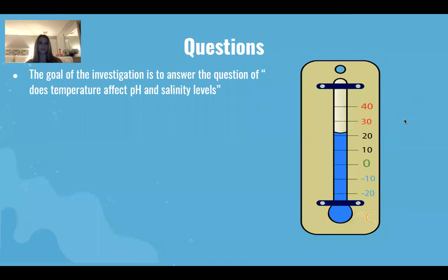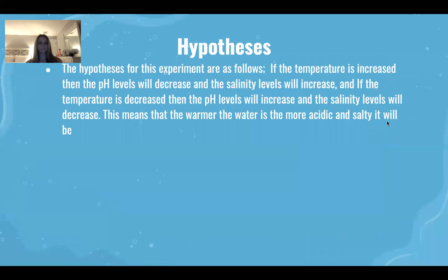The goal of the investigation was to answer the question: does temperature affect pH and salinity levels? The hypotheses for this experiment are as follows. If the temperature is increased, then the pH levels will decrease and the salinity levels will increase. And if the temperature is decreased, then the pH levels will increase and the salinity levels will decrease. This would mean that the warmer the water is, the more acidic and salty it will be.